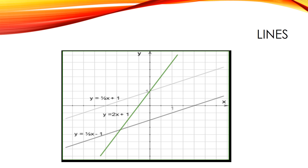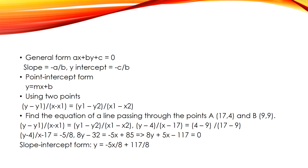For an equation in general form, the slope is −A/B and the Y intercept is −C/B. The slope-intercept form is represented as Y = MX + B, where M is the slope of the line, B is the Y intercept of the line, and X is the independent variable of the function Y.